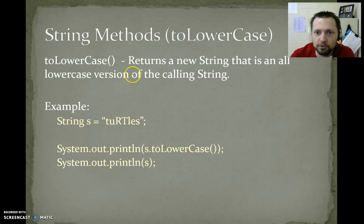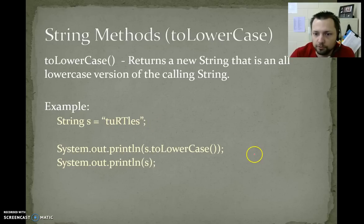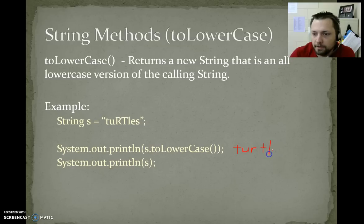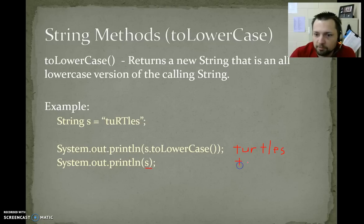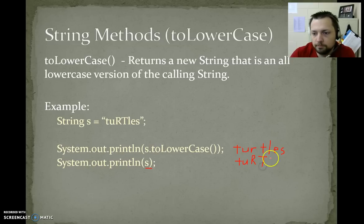Our next method is toLowerCase — returns a new string that is an all lowercase version of the string. So again we have "tUrTlEs". Our first output, s.toLowerCase(), returns a lowercase version of tUrTlEs: t, u, r, t, l, e, s in all lowercase. But then if we print s again, it is still exactly as we wrote it, because that method didn't change s.